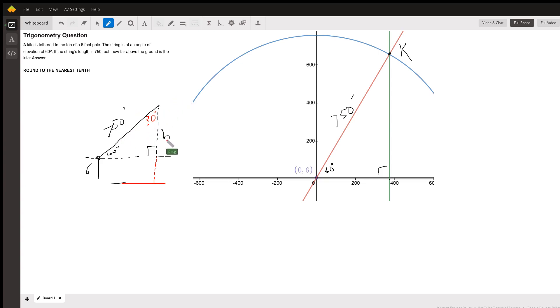Well, we don't know what that distance is here, so I just might do this: the sine of 60 equals h over 750, so h equals 750 times the sine of 60.